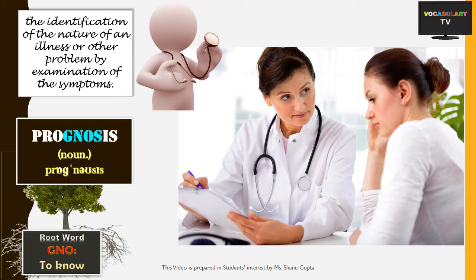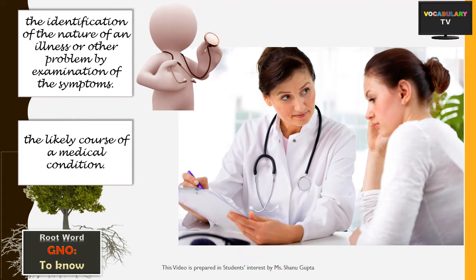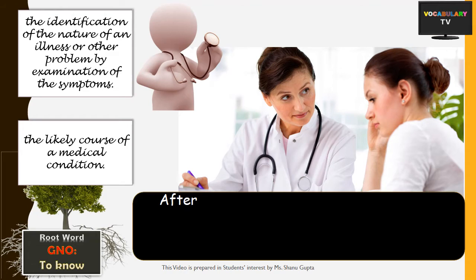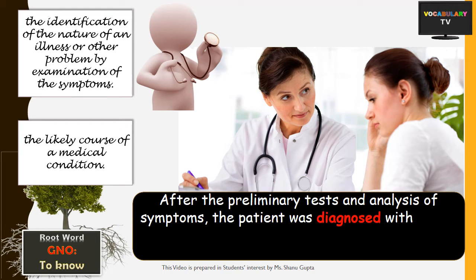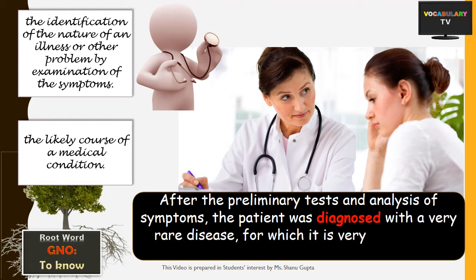Prognosis, on the other hand, literally means 'to know before' and refers to the likely course of a disease or medical condition and how it is going to develop over time. A sentence highlighting this difference: after the preliminary tests and analysis of symptoms, the patient was diagnosed with a very rare disease, for which it is very difficult to make an accurate prognosis.